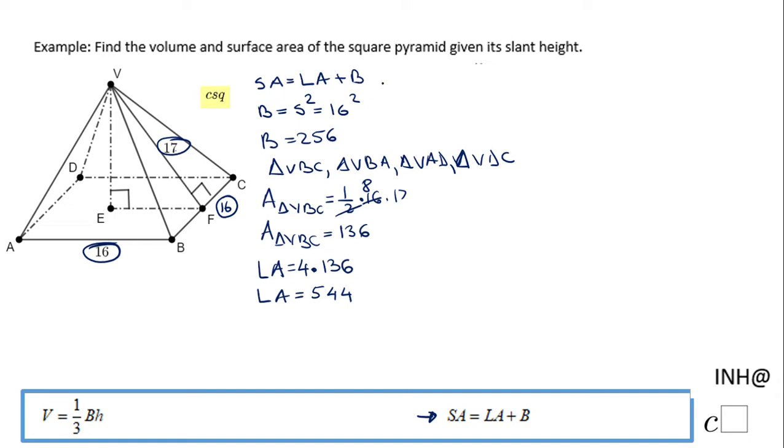Now we can find the surface area, which is the lateral area 544 plus the base 256. We end up with 800 square units. The surface area for this square pyramid is 800 square units.